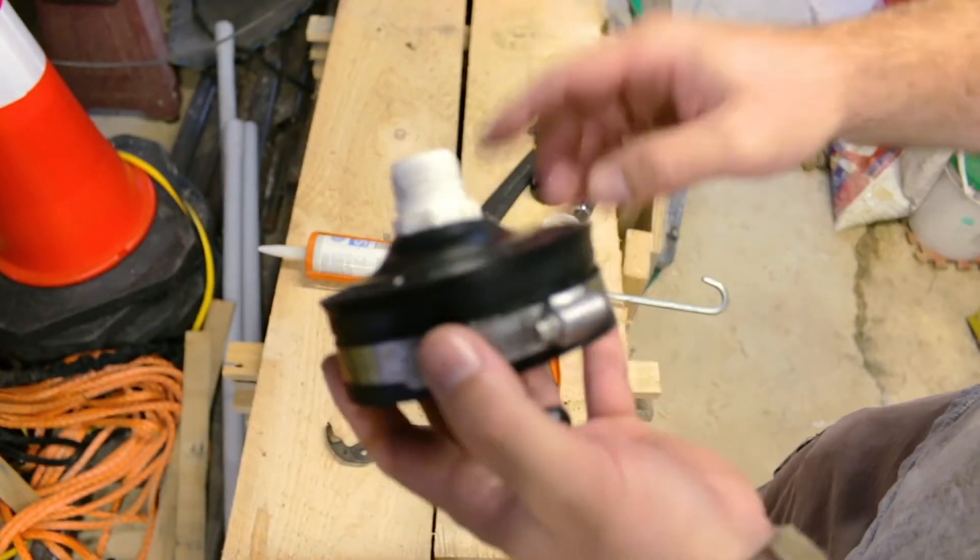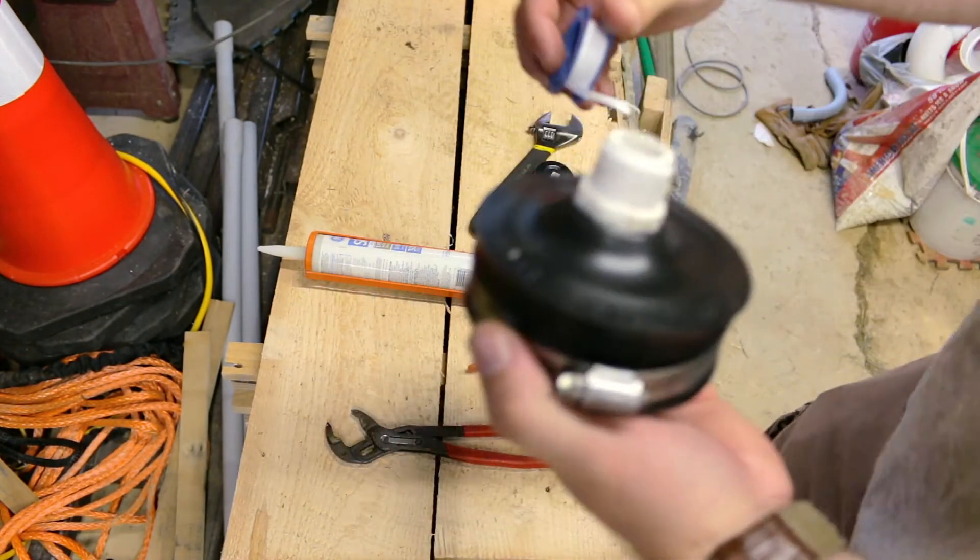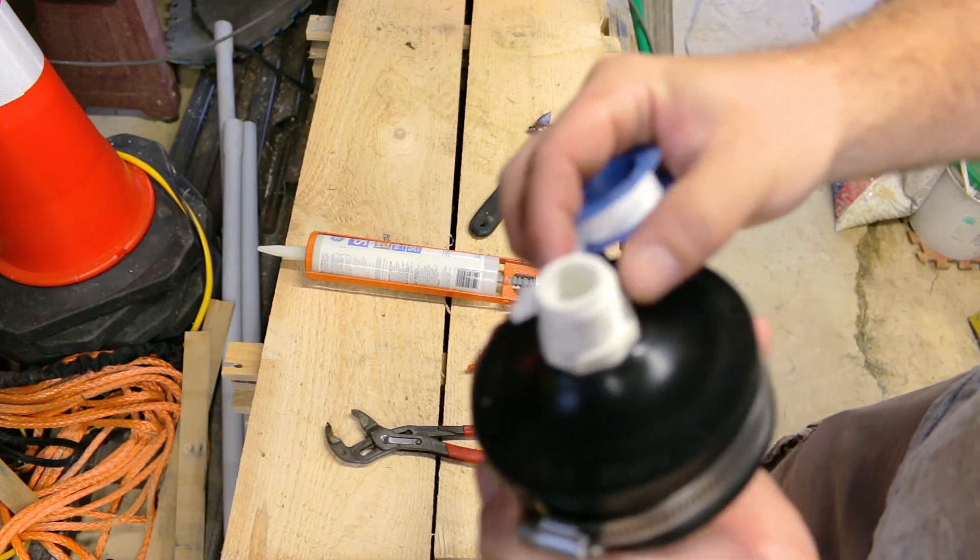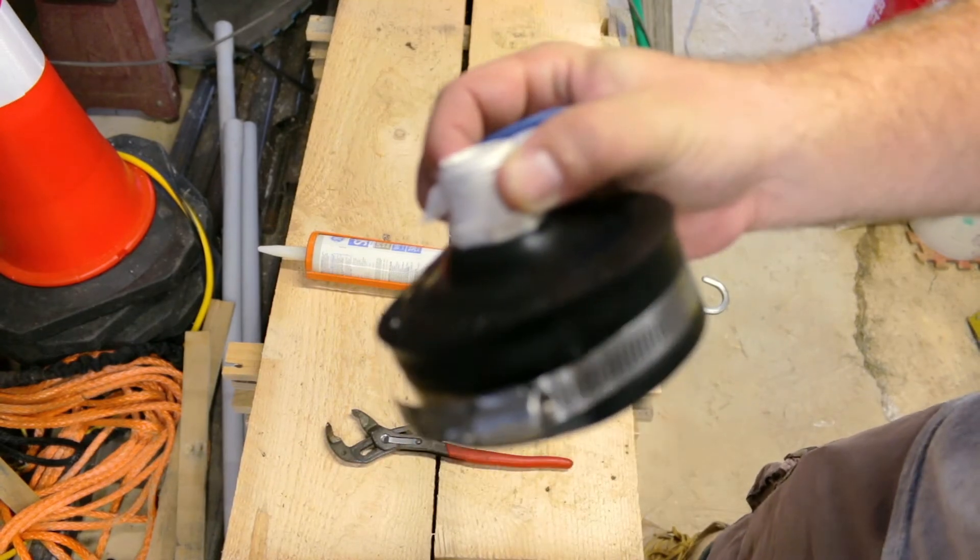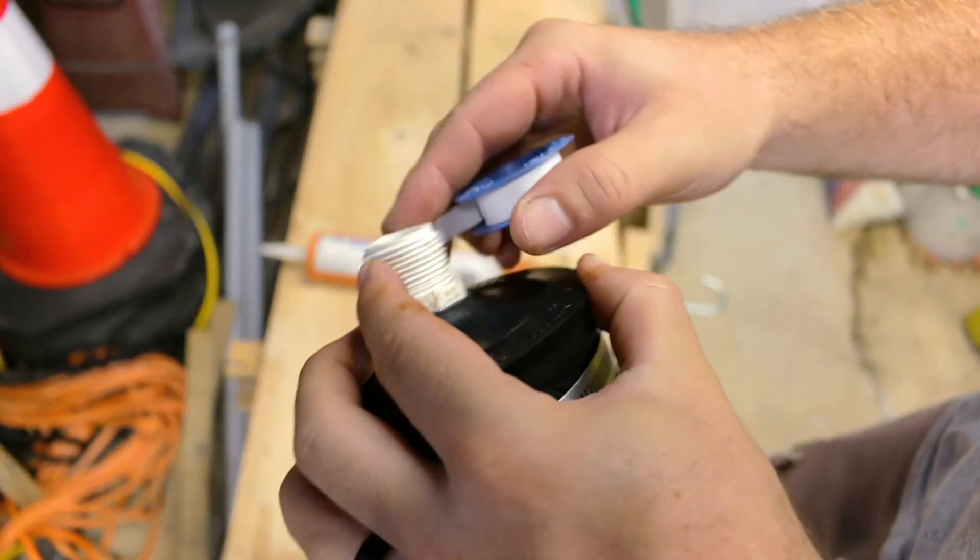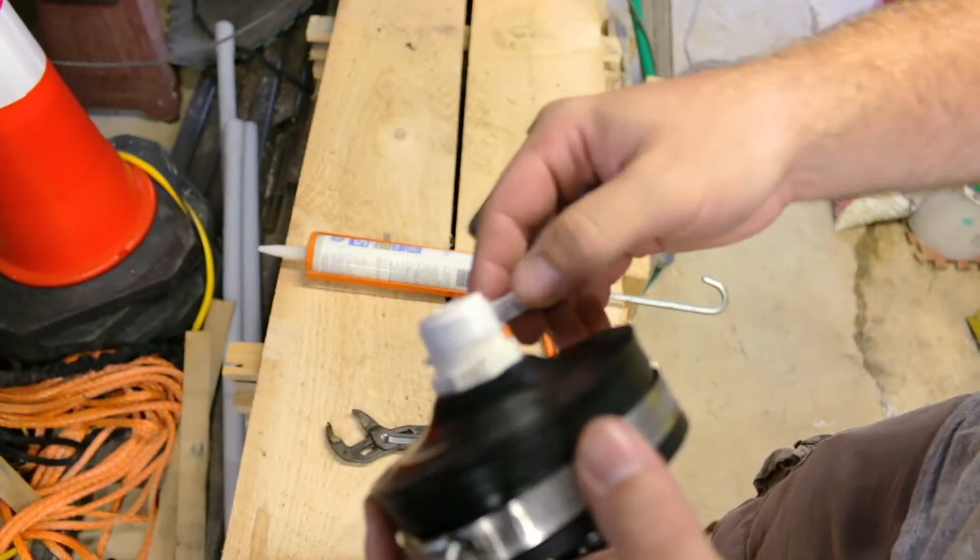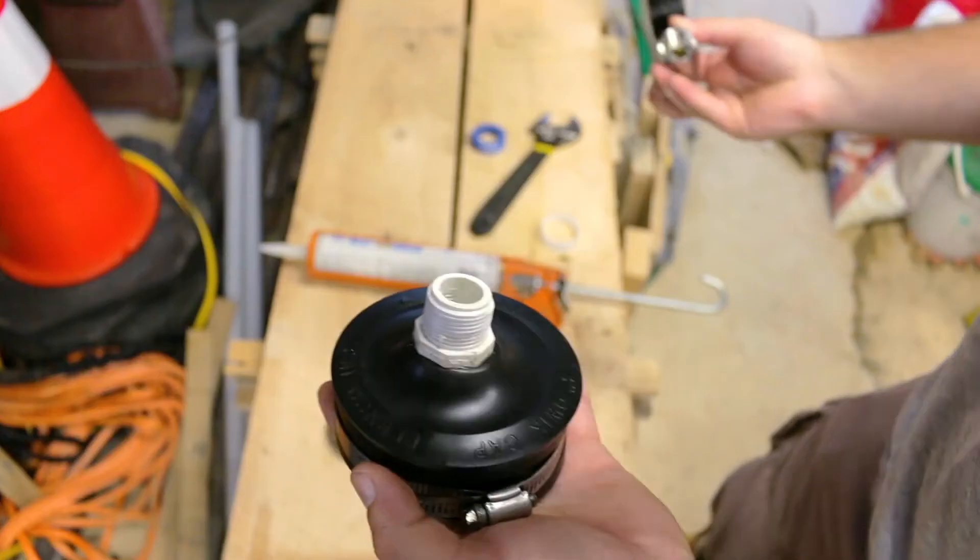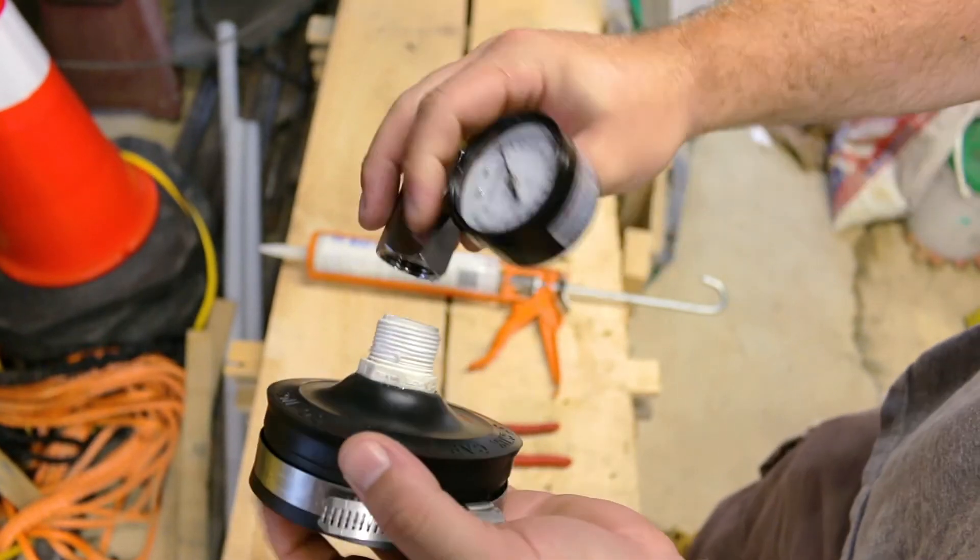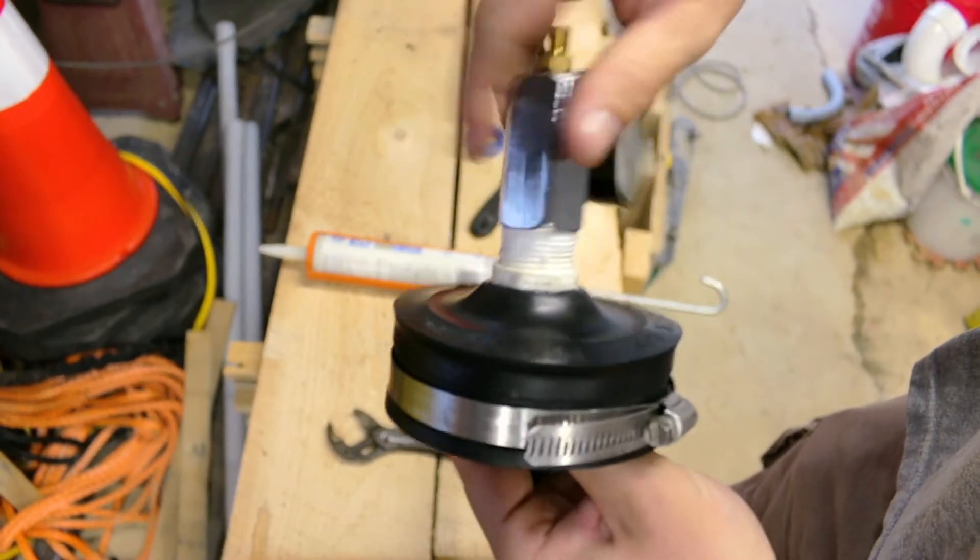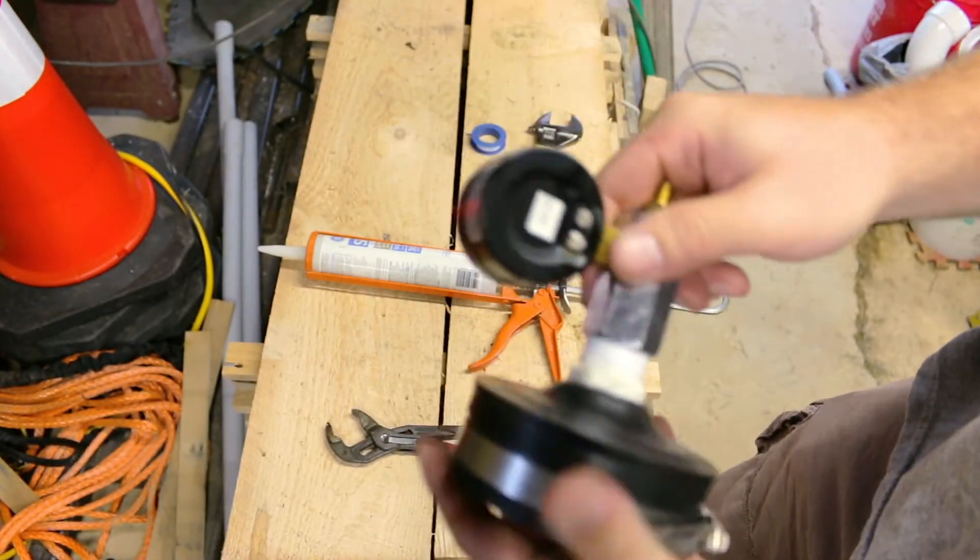And then what we can do next is take some teflon tape and put it on down the outside here. We can take our gauge, thread it onto here, and go ahead and tighten it up.